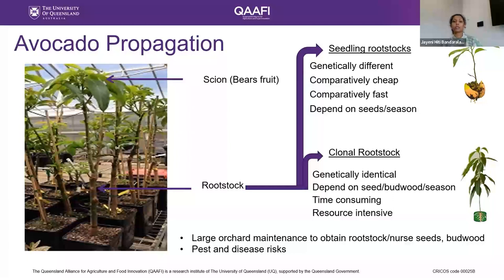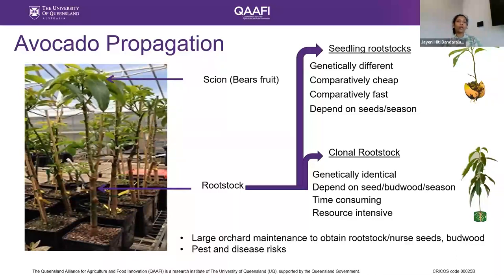On the other hand, clonal rootstocks are rooted cuttings — you get a genetically identical plant to the mother plant, but avocado rooting is not a very easy thing to do. It is a really cumbersome, time-consuming, and resource-intensive operation. Whatever the rootstock you use, both highly depend on the number of seeds you can gather and on the season. There is also a big risk of pest and disease transmission through these two propagation methods.